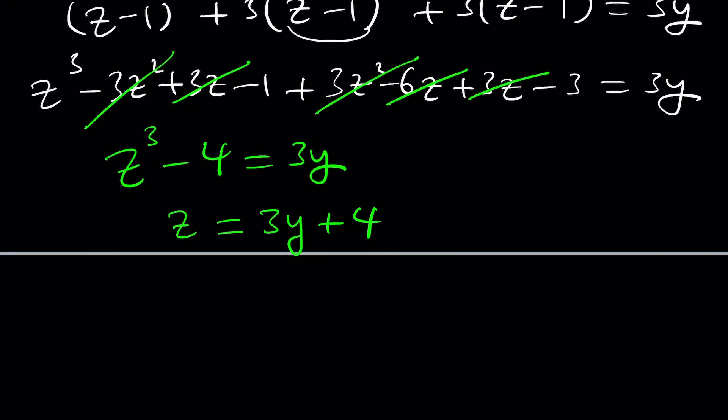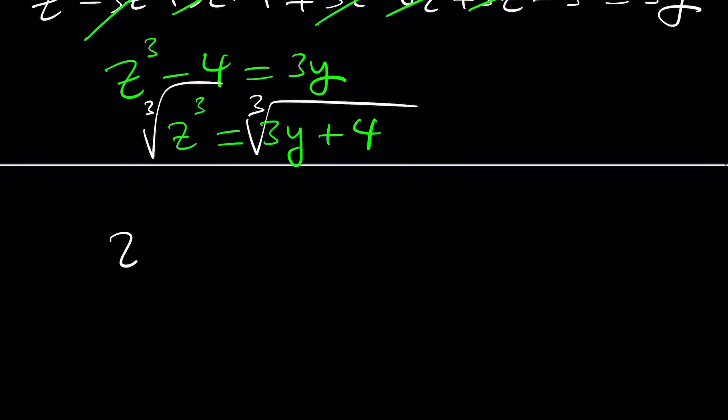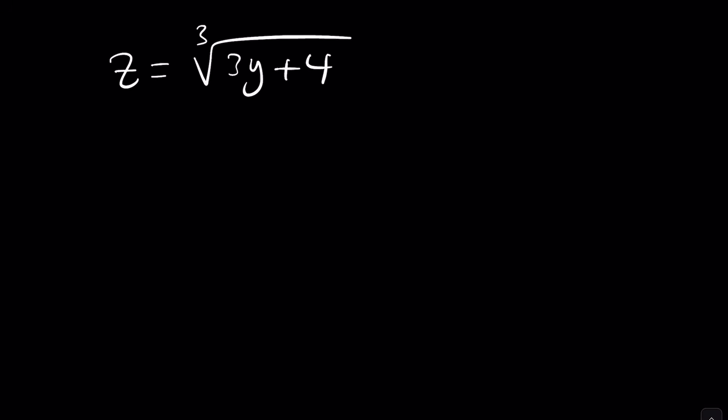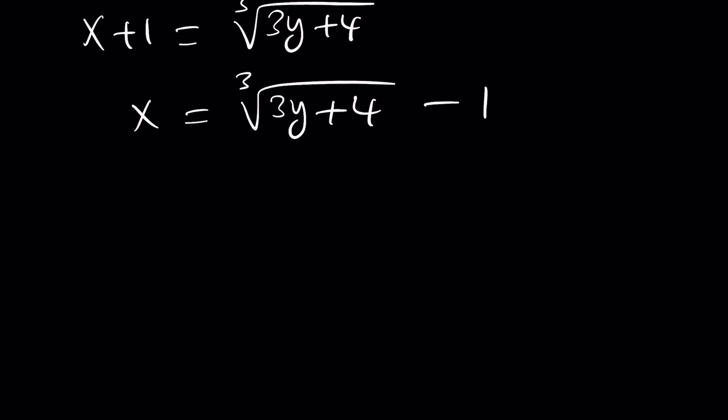You cube root both sides and you're done. That was quick. From here we can say z = ∛(3y + 4). What's the relationship between x and z? Well, x = z - 1, so x + 1 = ∛(3y + 4), which means x = ∛(3y + 4) - 1, and that does the trick. Now what is that supposed to mean? Let me show you the other approach, then I'll talk about the inverse. We're close to finding the inverse.